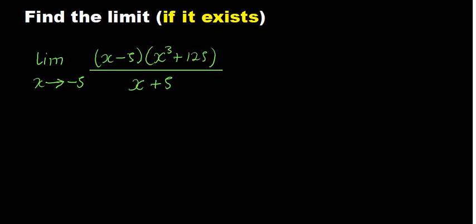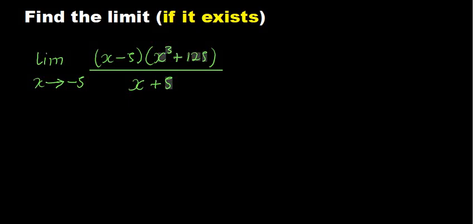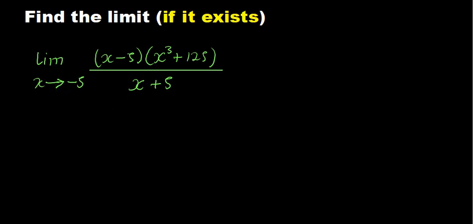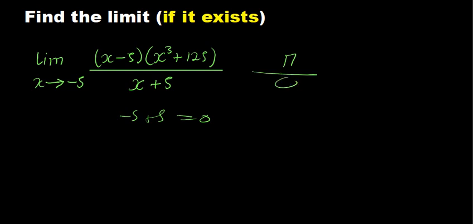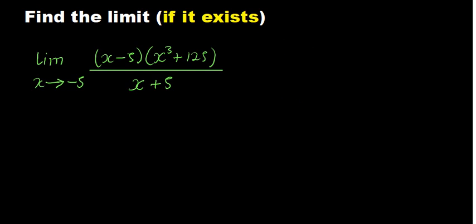We are given a rational function and the question asks us to find the limit if it exists. The first thing to do is attempt direct substitution — substituting minus 5 everywhere. However, looking at the denominator, if you substitute minus 5, you get minus 5 plus 5 which gives zero, meaning you'd have some value n divided by zero, which is undefined. So direct substitution is not going to work out.